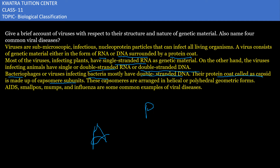The capsid is made up of capsomere subunits, which are arranged in helical and polyhedral geometrical forms. We will now talk about the four common viral diseases. Thank you.